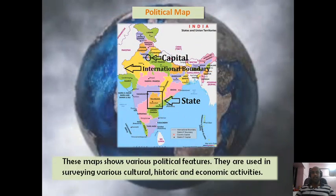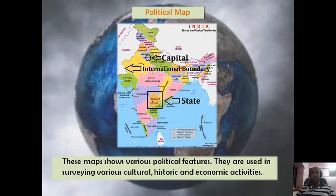On a political map, different kinds of man-made political features are shown — like the capital Delhi, international boundaries separating India from Pakistan, and states. Political maps are used in surveying various cultural, historic, and economic activities.